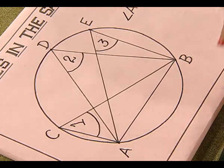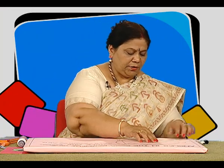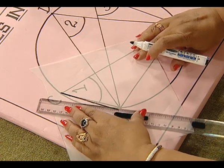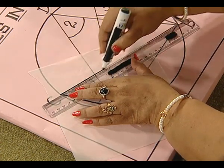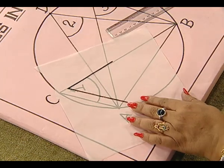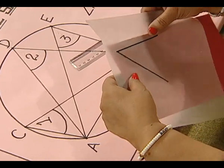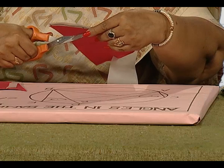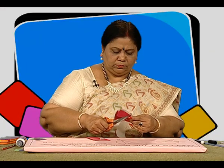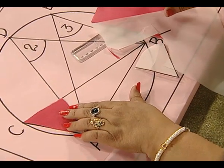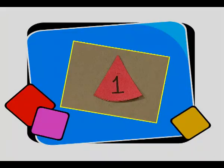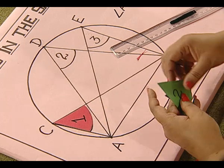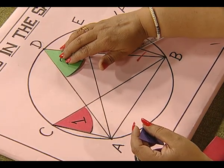How do we prepare the replicas of these angles? We take a tracing paper and draw angle ACB, and with the help of colored chart paper, we prepare the replica of this angle. Likewise, we prepare the replicas of angles ADB and AEB, which we have already prepared. Look here — we have the replicas of these angles as angle 1, angle 2, and angle 3.